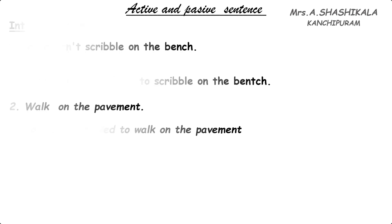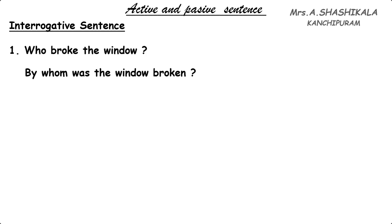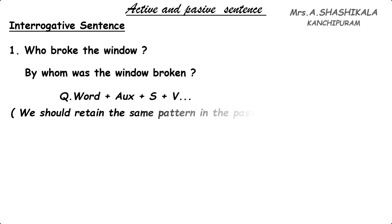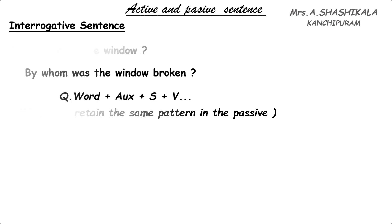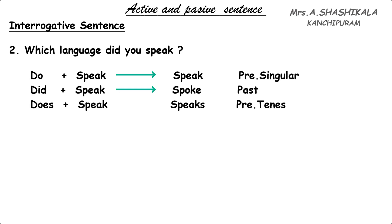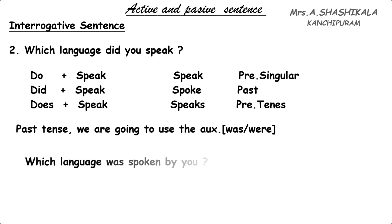Now see interrogative sentences. First example: 'Who broke the window?' 'Who' changes to 'by whom'. The passive is: 'By whom was the window broken?' Retain the question mark. Second example: 'Which language did you speak?' Here 'did' plus 'speak' equals spoke — past tense. So we use 'was'. The answer is: 'Which language was spoken by you?'